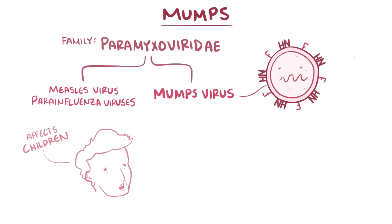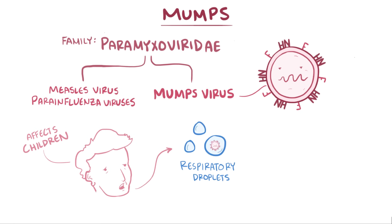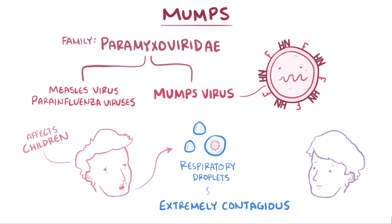Mumps only affects humans and is spread by tiny respiratory droplets that are small enough to be carried short distances in the air. The mumps virus is extremely contagious, and anyone near a person with mumps is at risk for getting the disease as well.